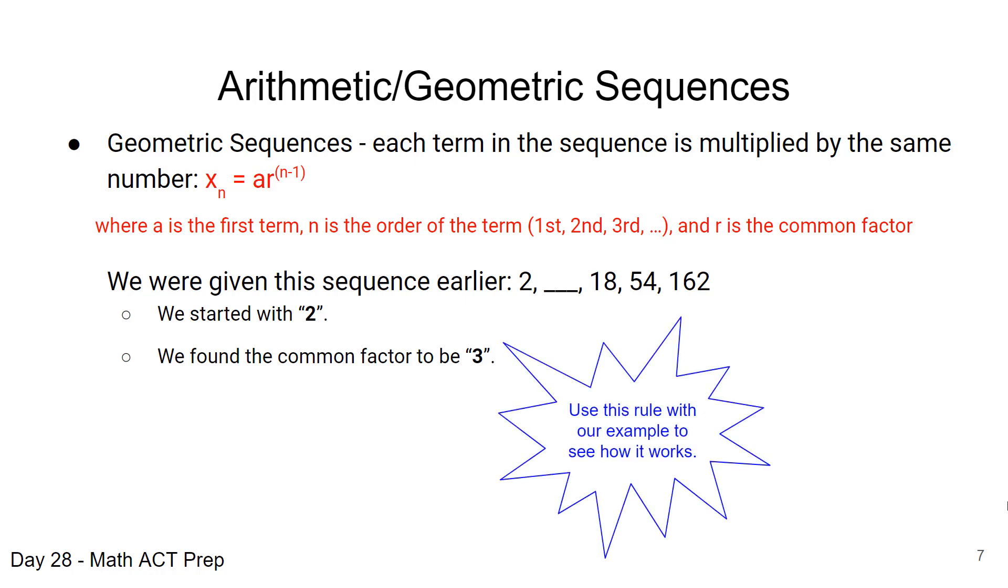So we can use this rule and see how that works. We'll plug in each value. If we're looking for the second value here, x sub 2, that's equal to 2 times 3 raised to the n minus 1 which is 2 minus 1, and we simplify and get 2 times 3 which is 6.